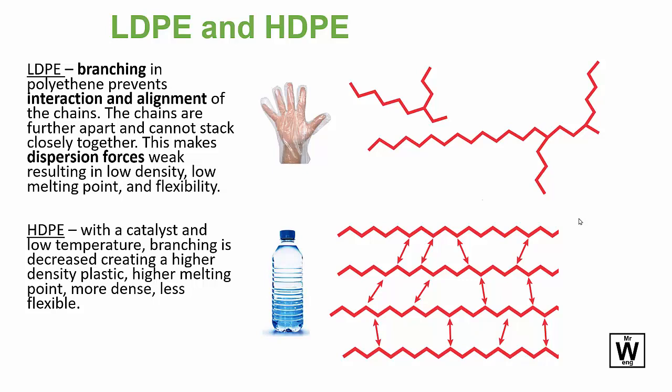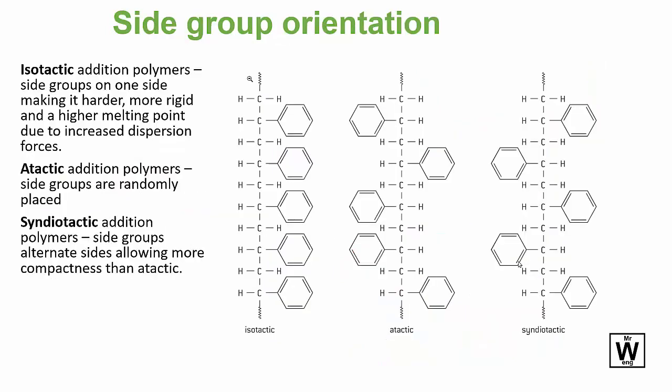Low density polyethene: there is branching there, so that means the chains are stopping the stacking, decreasing the surface area and therefore there's less dispersion forces. You get low density, low melting point, and flexibility. The opposite occurs for high density polyethene—there's no branching, so they can compact and have a greater surface area and stick together much better due to the dispersion forces.